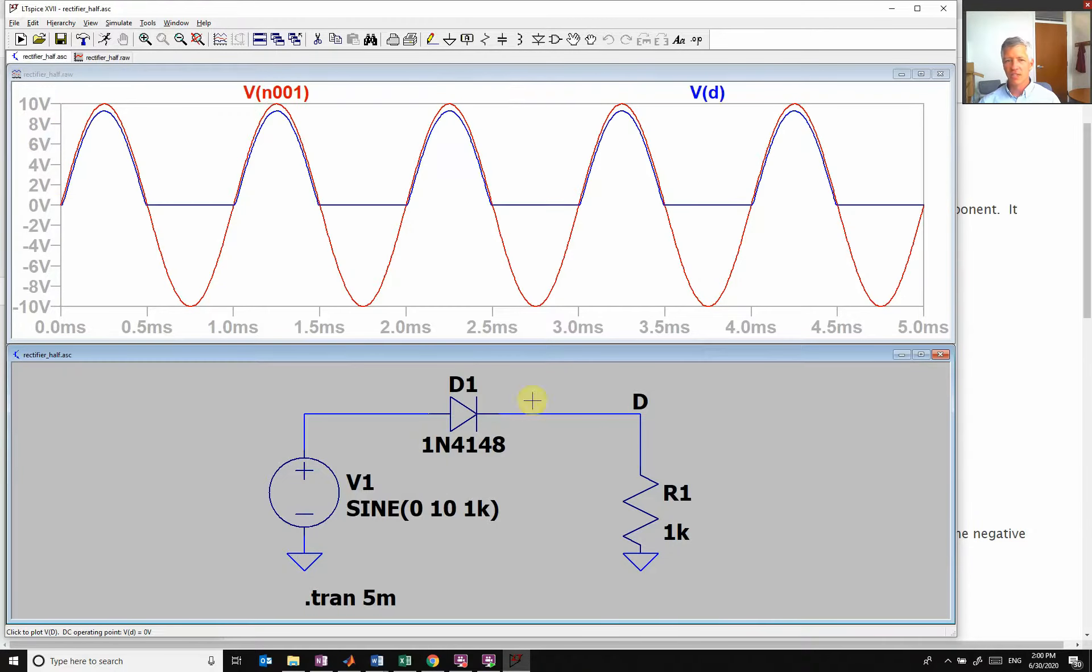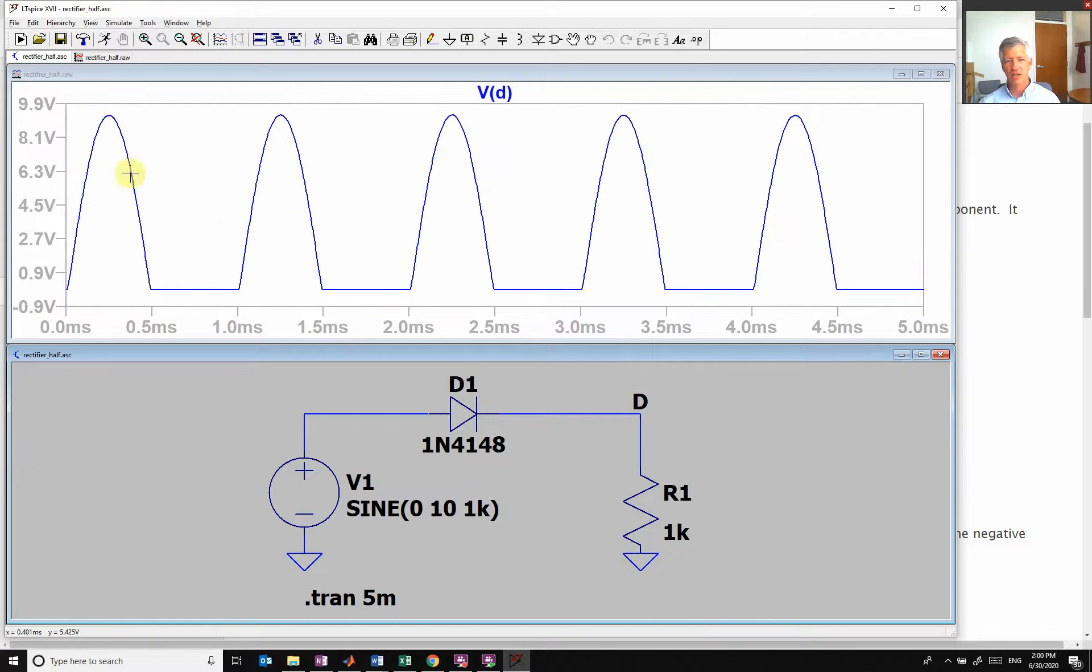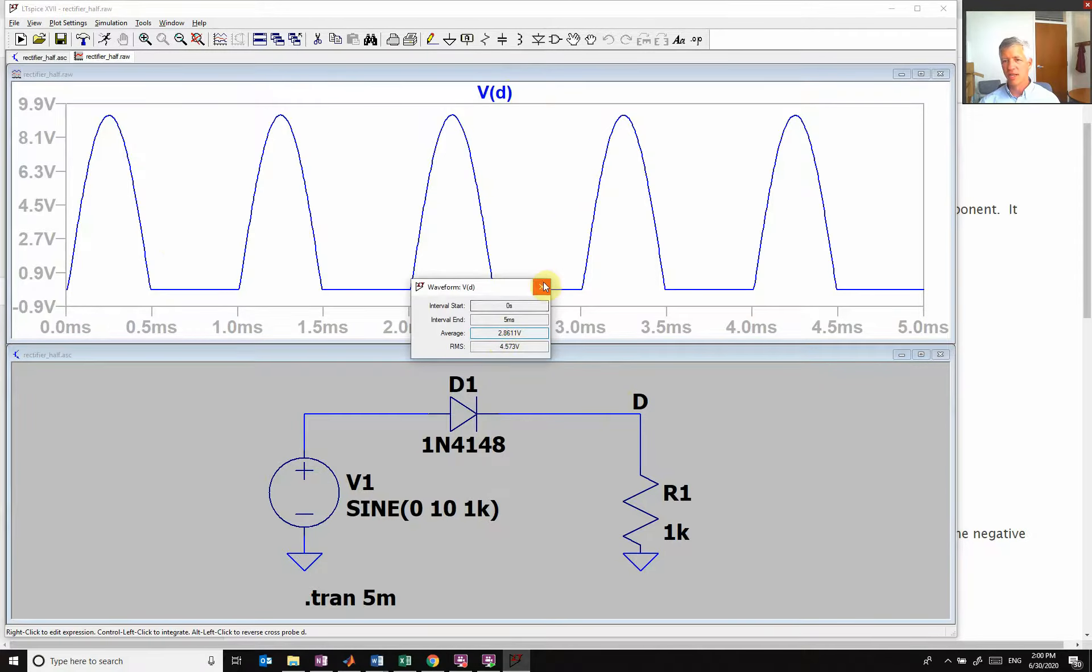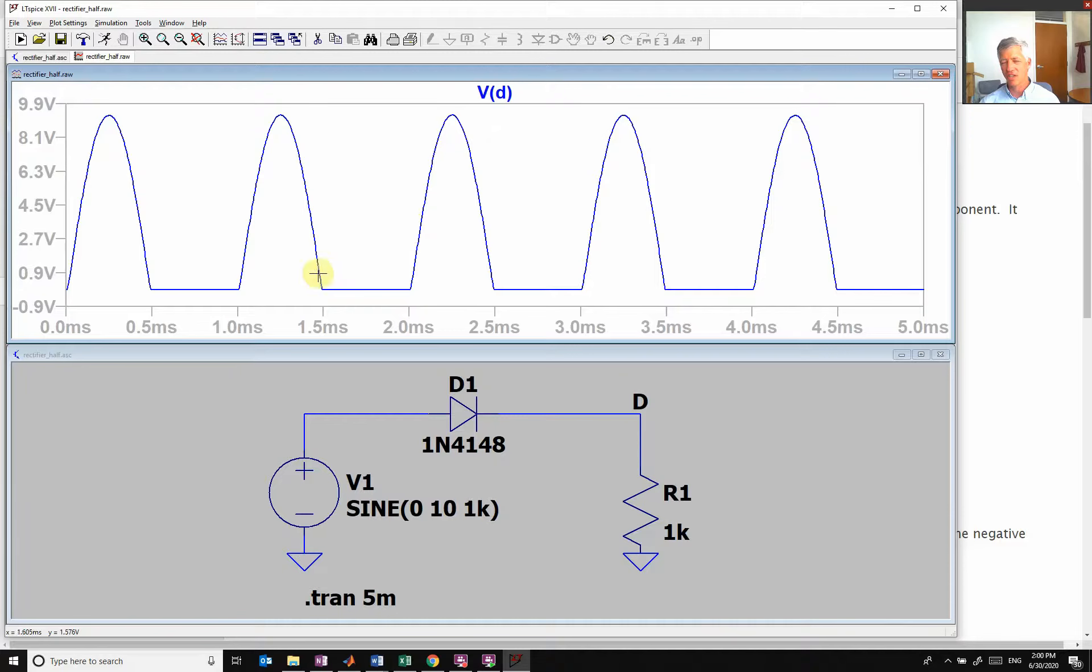So if I look at the voltage here, you see that it's going up, but then when it tries to go negative, it just clips it off. So if I look at the voltage right here, it just looks like a set. And so the average value, if I hold down the control, I can get the average values about 2.86 volts.